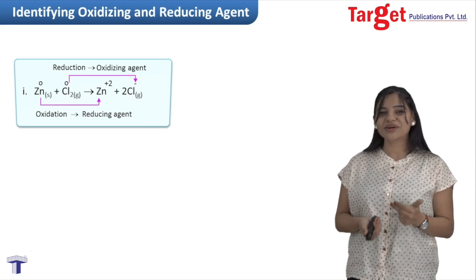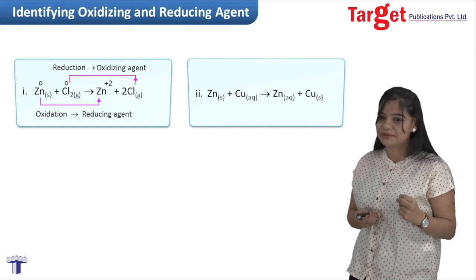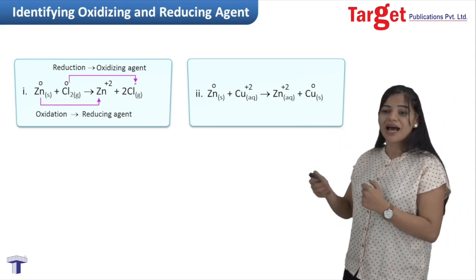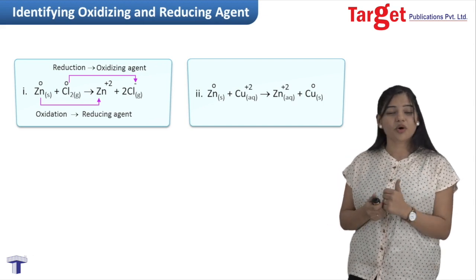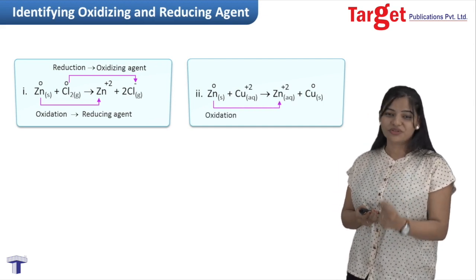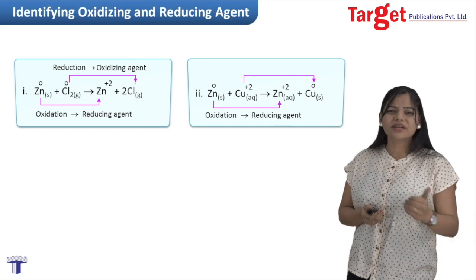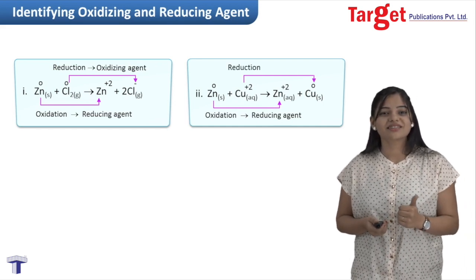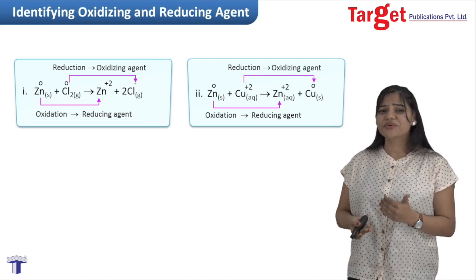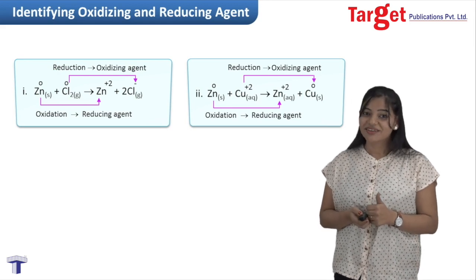Let's see another example to identify oxidizing and reducing agents. Here zinc and copper: Zn starts at 0 and forms Zn²⁺ (number goes from 0 to +2), so zinc is undergoing oxidation and acts as the reducing agent. Copper starts at +2 and goes to 0 (number decreases), so copper is undergoing reduction and acts as the oxidizing agent. It should now be very easy to identify oxidizing and reducing agents in any given reaction. Goodbye.